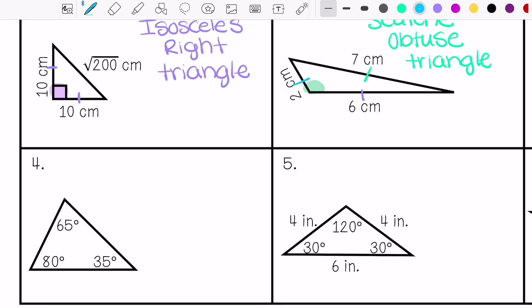Number four, we have all different angles, which also means my sides are all going to be different. And then my angles are less than 90. So this is a scalene acute triangle.